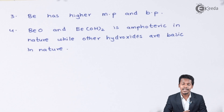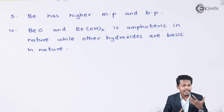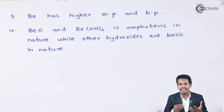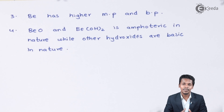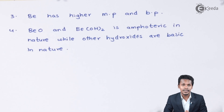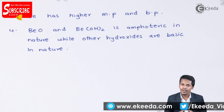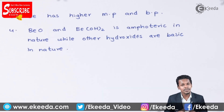Beryllium oxide and beryllium hydroxide are amphoteric in nature. Amphoteric means Be(OH)₂ can be acidic or basic depending on the solution it is dissolved in. While magnesium hydroxide is basic in nature, BeO and Be(OH)₂ — even though they contain an OH group — are not simply basic; they are amphoteric. This also makes beryllium exceptional compared to other elements in the same group.